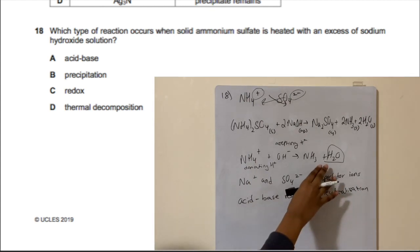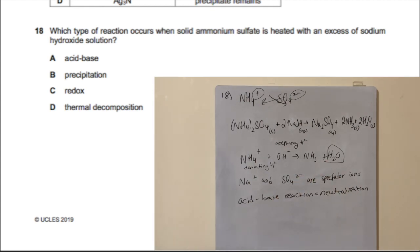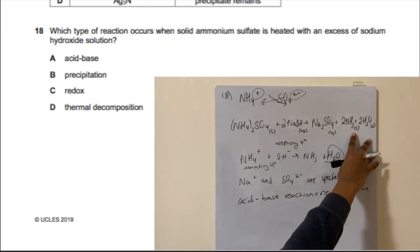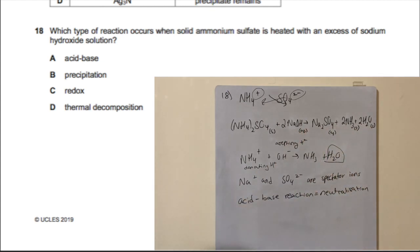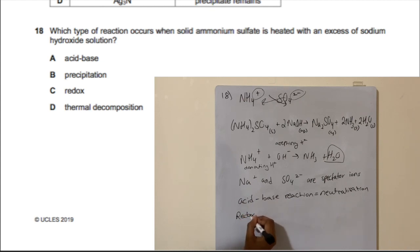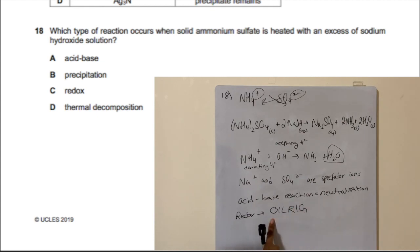Neutralization usually involves the formation of water, though not always. Option B is wrong — there's no precipitate; option C is wrong — there's no redox reaction (no change in oxidation states); option D is wrong — nothing is broken down to its elements. So A is the answer.